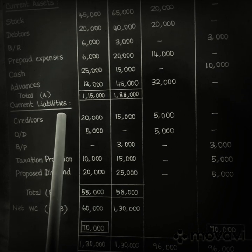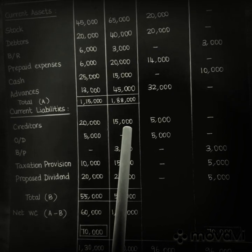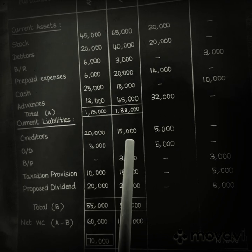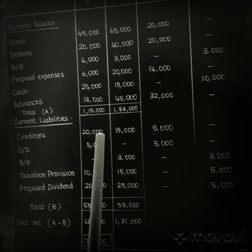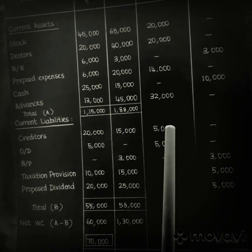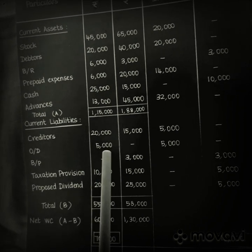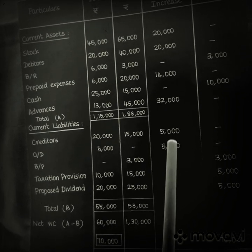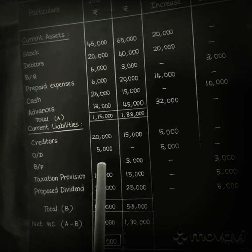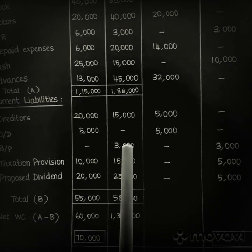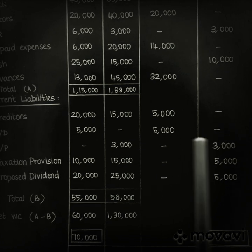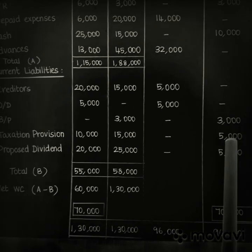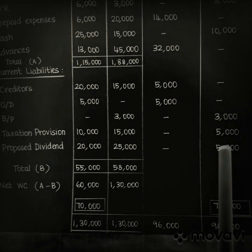For current liabilities, the rule is vice versa. When current liabilities increase, show in the decrease column; when they decrease, show in the increase column. Credit tax shows a decrease, so it is shown in the increase in working capital column — 5,000 in the previous year and nothing in the current year. Bills payable: nothing in the previous year, 3,000 in the current year — an increase, so shown in the decrease column. Other current liabilities that increased are similarly shown in the decrease column.